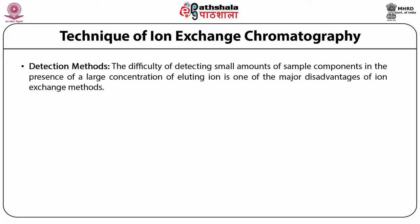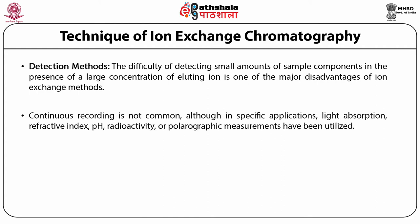Regarding detection methods: the difficulty of detecting small amounts of sample components in the presence of a large concentration of eluting ions is one of the major disadvantages of the ion exchange method. Continuous recording is not common, although in specific applications light absorption, refractive index, pH, radioactivity, or polarographic measurements have been utilized. The most common practice is to collect numerous small equal-volume fractions and analyze each fraction for the species of interest.